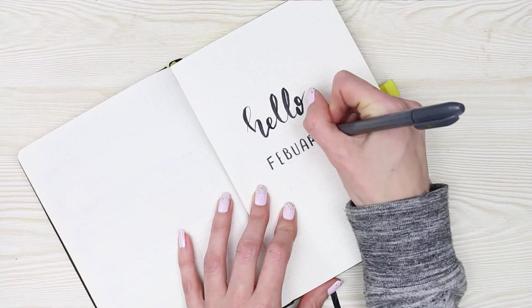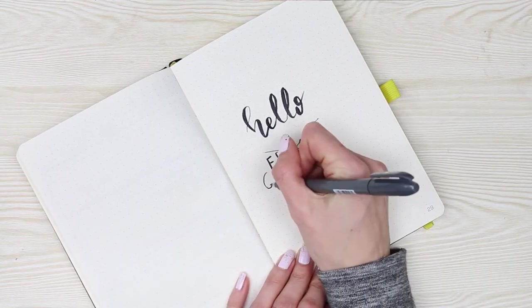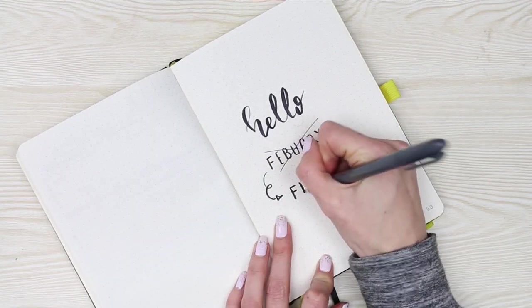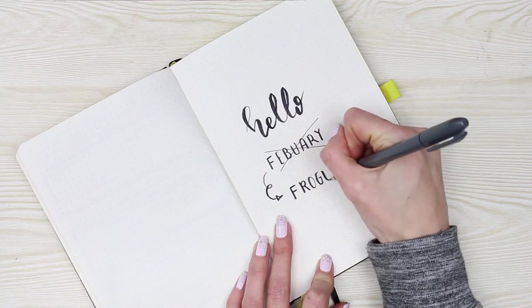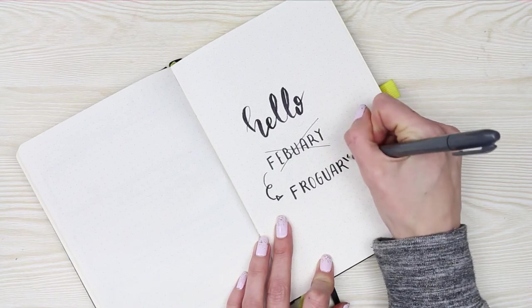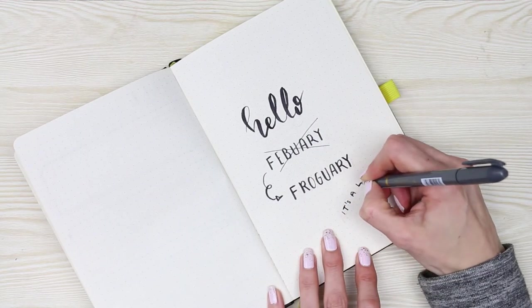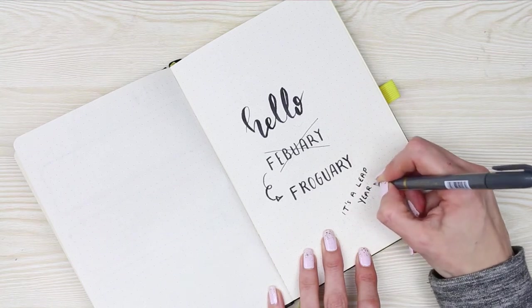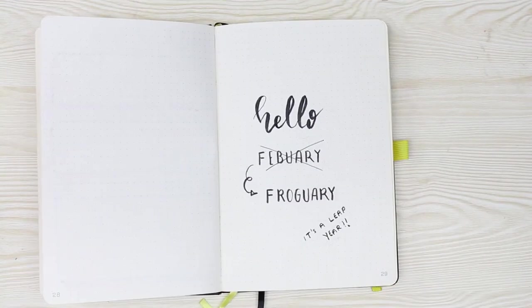But I decided to cross out February and rename it Froguary. Hilarious, I know. We are in a leap year, which means that February gains an extra day. So if your official birthday is on the 29th of February, congratulations, you can actually celebrate your true birthday.